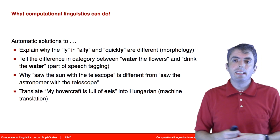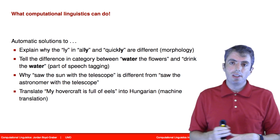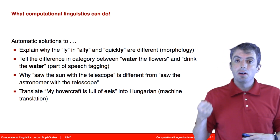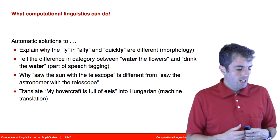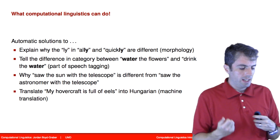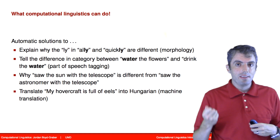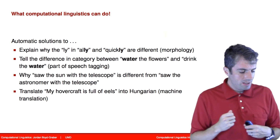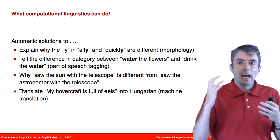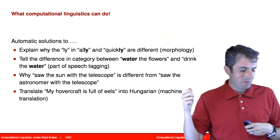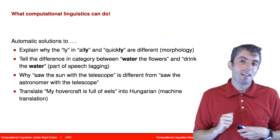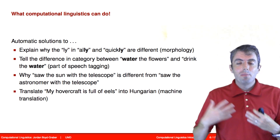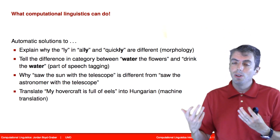We'll talk about a variety of natural language applications, from understanding why the words 'ally' and 'quickly' are different — this is called morphology — to understanding the difference between 'water the flowers' and 'drink the water,' which have different parts of speech. We'll also understand how 'saw the astronomer with the telescope' is different from 'saw the sun with the telescope' — this is differences in syntax. And we'll also do things like translate 'my hovercraft is full of eels' into Hungarian.